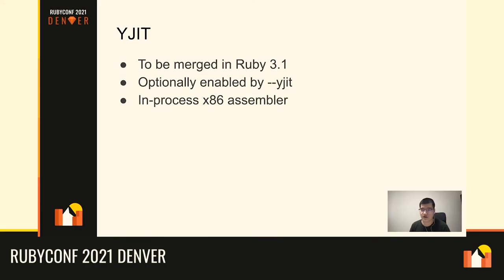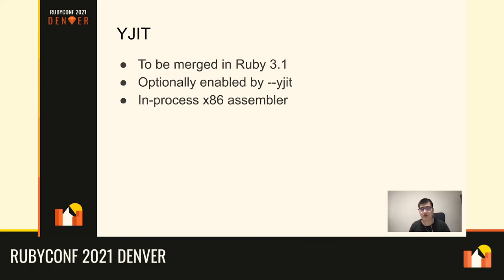These days, Shopify is developing another JIT compiler implementation called YJIT, currently discussed to be merged in Ruby 3.1. It's also planned to be optionally enabled by the --yjit option. Unlike MJIT, it uses an in-process x86 assembler, so you don't need separate C compiler processes under the Ruby process. YJIT also has quicker warm-up because of faster JIT compilation performance.